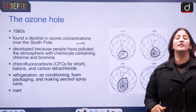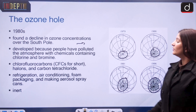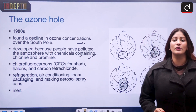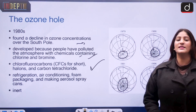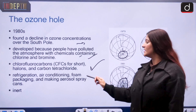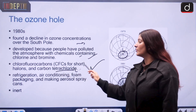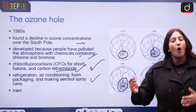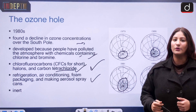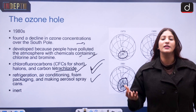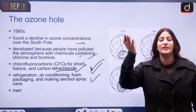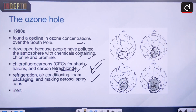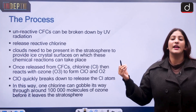This decline developed because people polluted the atmosphere through the use of chemicals containing chlorine and bromine. The culprits include chlorofluorocarbons (CFCs), halons, and carbon tetrachloride, used in refrigeration, air conditioning, foam packaging, and aerosol spray cans. CFCs are so inert that they are carried very high into the stratosphere, where they can remain for a long period of time.